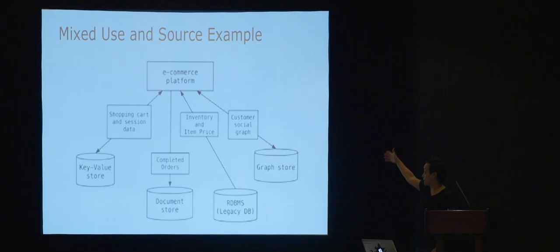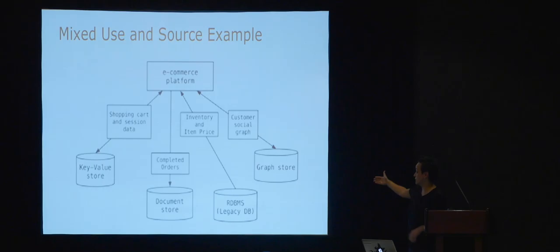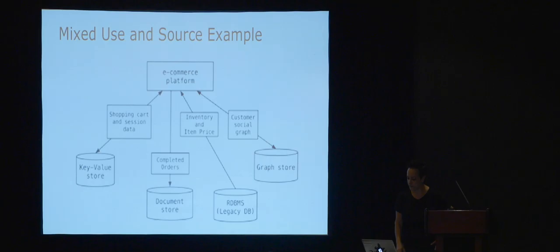Your shopping cart, session data, food store, item price, customer social graph using Neo4j, completed orders — transactional data is still going to be relational most likely. Then you take that information and put it into either a legacy relational data warehouse or use key-value stores, or Elastic for fast and fuzzy text searching. So many different tools available for each need.